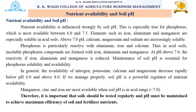Nutrient availability is influenced strongly by soil pH. This is especially true for phosphorus, which is most available between a pH range of 6 to 7.5. Elements like iron, aluminium and manganese are soluble in acid soils. Above pH 7, calcium, magnesium and sodium are increasingly soluble. Phosphorus is particularly reactive with aluminium, iron and calcium. Thus in acid soils, insoluble phosphorus compounds are formed with iron, aluminium and magnesium. At a pH range above 7, the reactivity of iron, aluminium and magnesium is reduced. Maintenance of soil pH is essential for phosphorus solubility and availability.